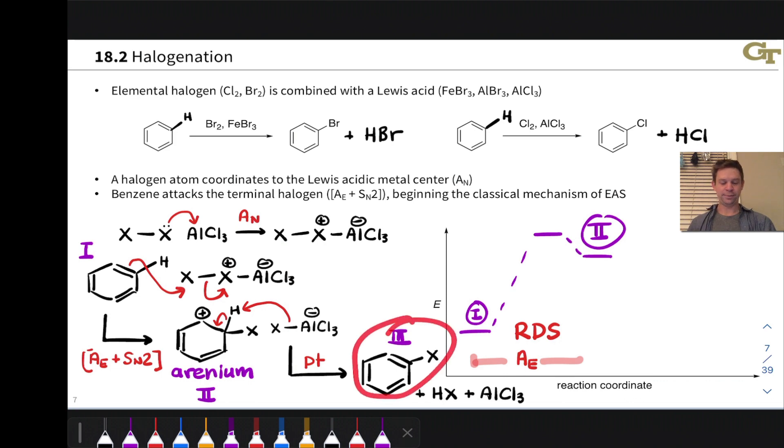Now we have the halogen substituted benzene, the halobenzene. We've generated HX as a byproduct, and at least hypothetically, we've regenerated our Lewis acid catalyst. So this is indeed a catalyst, although this can get together with HX and do a lot of funky things. So quite often we need to use a full equivalent of the AlCl3.